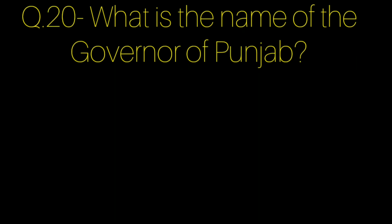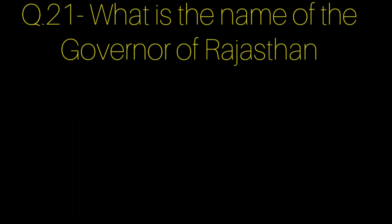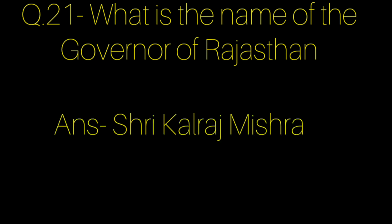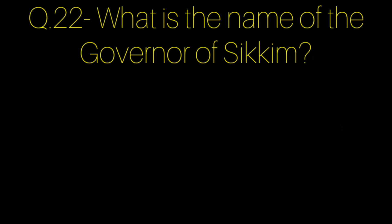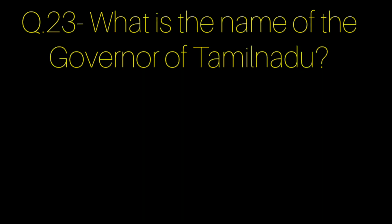Question number 20: What is the name of the governor of Punjab? Answer: Shri Banwarilal Purohit. Question number 21: What is the name of the governor of Rajasthan? Answer: Shri Kalraj Misra. Question number 22: What is the name of the governor of Sikkim? Answer: Shri Lakshman Prasad Acharya.